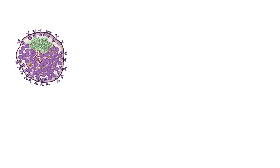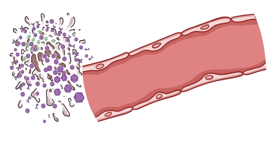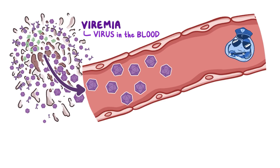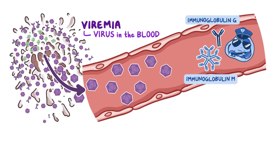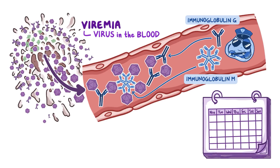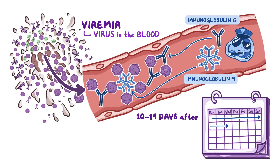But thankfully, this is only temporary. When the cell dies, it bursts open, releasing copies of the virus into the blood — also called viremia. Our immune system detects the virus and starts producing specific immunoglobulin M and immunoglobulin G antibodies to fight the infection by forming immune complexes with the parvovirus B19 antigen. For individuals with a functioning immune system, this typically happens between 10 and 14 days after first becoming infected with the virus.